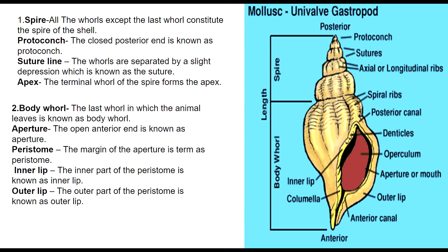Then we go with the body whorl. The last whorl in which the organism lives is known as the body whorl. The open anterior end is known as the aperture. Then comes the peristome — the margin of the aperture is termed the peristome. It has inner lips and outer lips. The inner part of the peristome is known as the inner lip and the outer part is known as the outer lip.